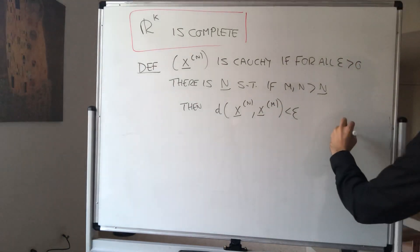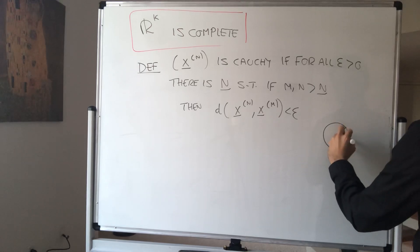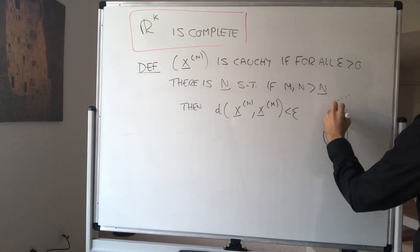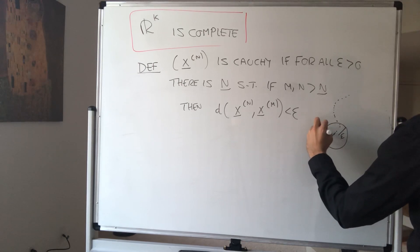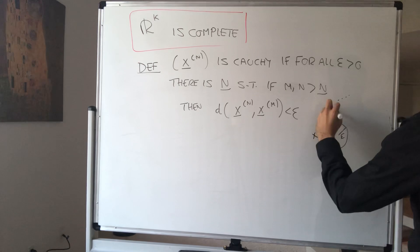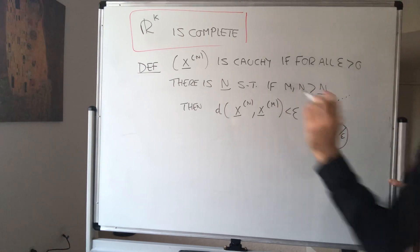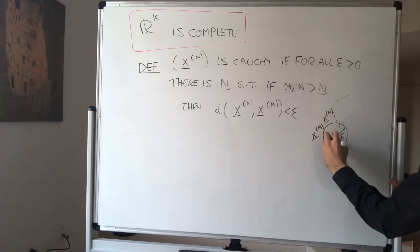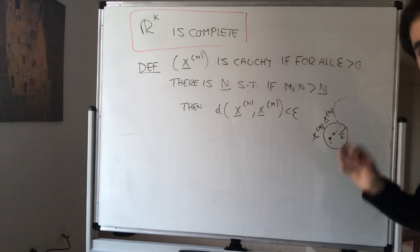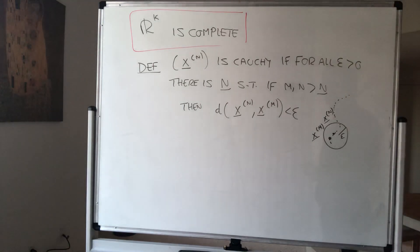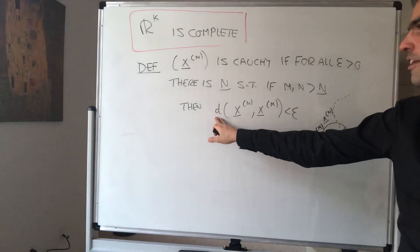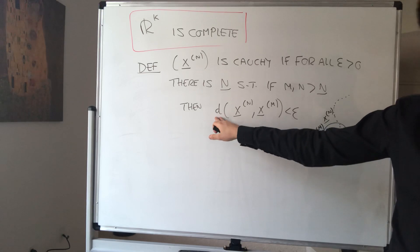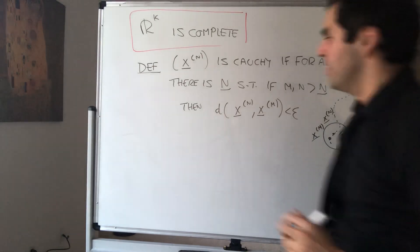In other words, no matter how small of a region I give you, a radius epsilon, eventually all the terms of your sequence are in that region, so close together. And importantly, this makes no mention of the limit at all. All that we know is that those values of the sequence are just close together. By the way, here distance works for any distance, but it's the square root of sum of squares definition.